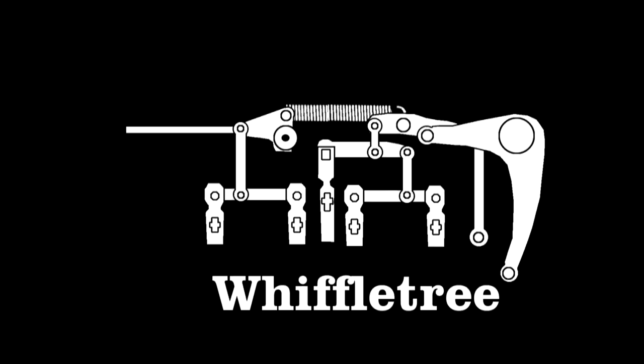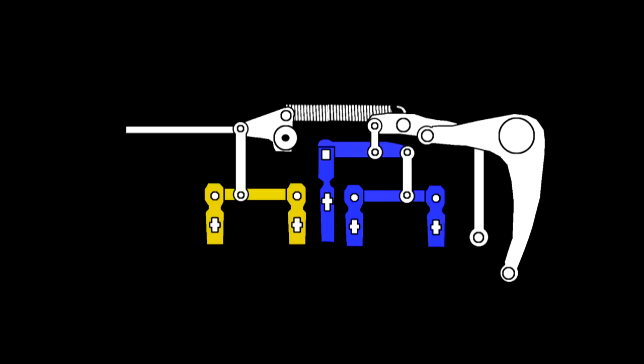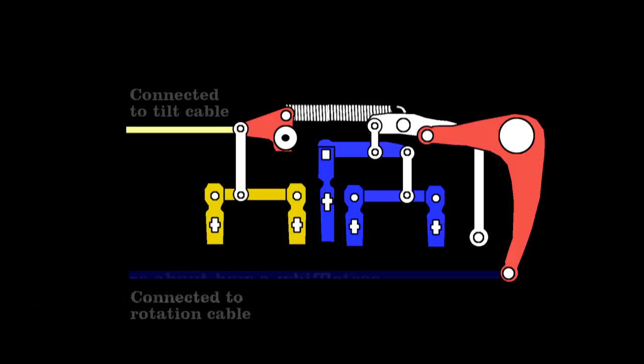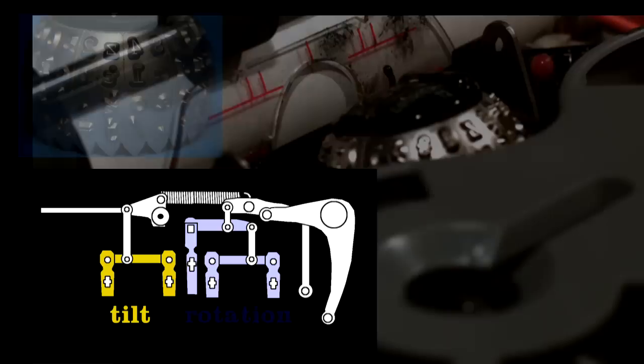It's based on an old device called a whiffle tree. It's a contraption that distributes force evenly through a set of rigid linkages. Here, the typewriter keys pull on the colored tabs, which the whiffle tree translates into a precise rotation of these pieces, which in turn tug on the two cables I showed earlier. The yellow tabs control the tilt, the blue ones the rotation.